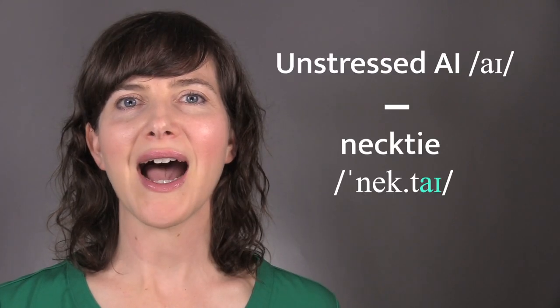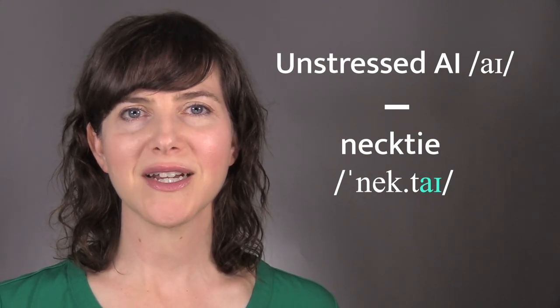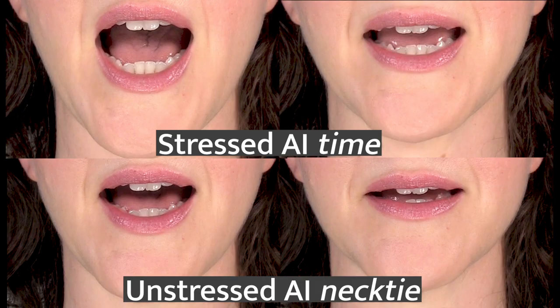Here is a close-up of what I looks like in an unstressed syllable, like in the word necktie. The stressed I is in the top pictures, and the unstressed I is in the bottom pictures. Notice the difference in jaw opening between the stressed and unstressed positions.